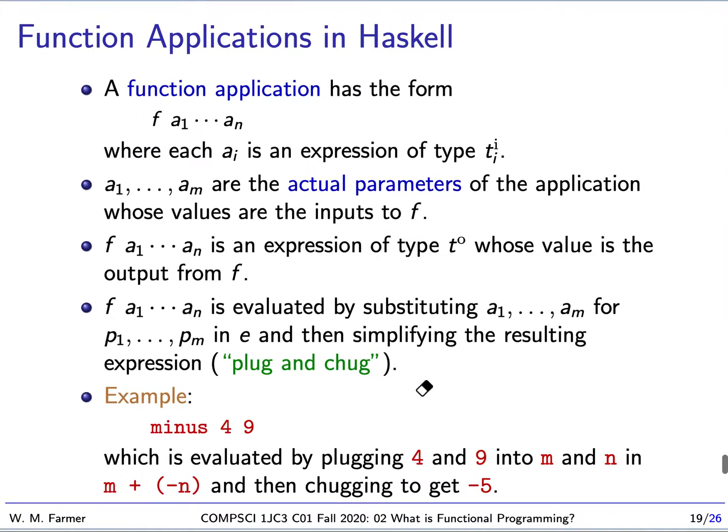How do we use these functions? We need a function application, which is very simple. It's the name of the function f, and then we give it the N arguments. We could give it less than N arguments if we wanted to, but usually you give it the full N arguments. Each argument has to have the right type. We call these actual parameters because they're actual inputs. This application is an expression itself with a value and type.